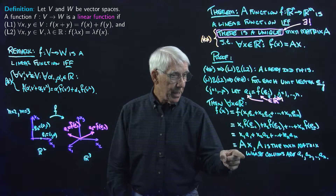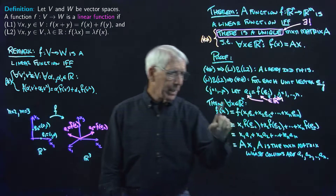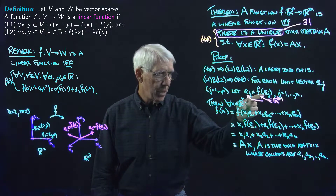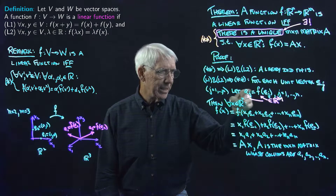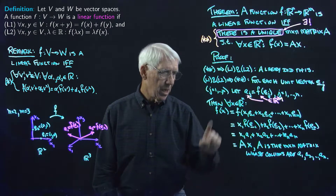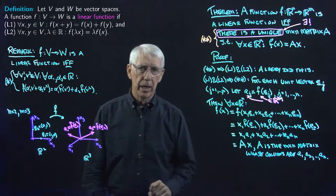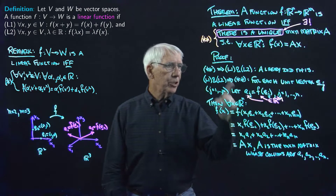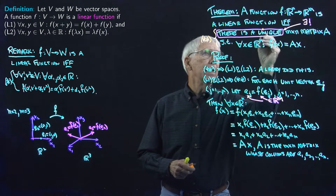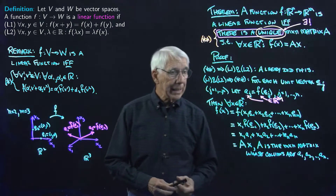So we've actually proved that for a linear function, we can use this technique of seeing what happens to the unit vectors under F, use that to define the columns of a matrix, and therefore define a matrix for which F of x equals A times x for every element of the domain. We've actually finished the proof except for one thing: we haven't shown that the matrix A is unique.